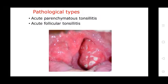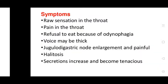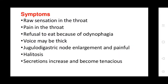Pathological types include acute parenchymatous tonsillitis and acute follicular tonsillitis. Symptoms include raw sensation in the throat, pain in the throat, refusal to eat due to odynophagia, and thickening of the voice.